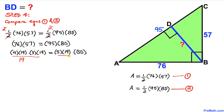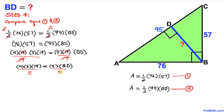After canceling 19 from both sides, we divide both sides by 5 to isolate BD. The 5s cancel, giving us BD equals 4 times 3 times 19 divided by 5, which is 228 divided by 5.